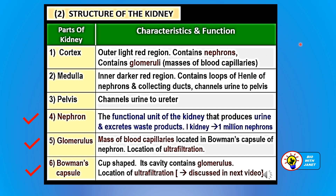Here are the smart notes for what we have discussed about the cortex, medulla, and pelvis. The most important parts concern the nephrons, which are the functional units of the kidney that produce urine and excrete the waste products. One kidney has about 1 million nephrons. We'll discuss the glomerulus and the Bowman's capsule afterwards.